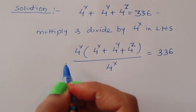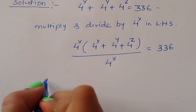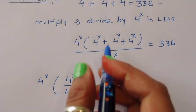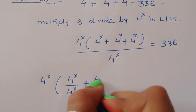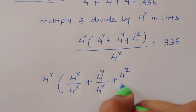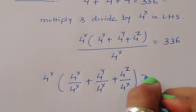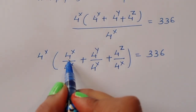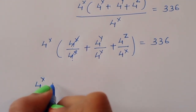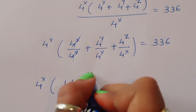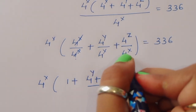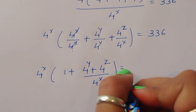Now if we multiply, we get 4 power x times 4 power x — separating the terms — plus 4 power y over 4 power x, plus 4 power z over 4 power x, is equal to 336. Now 4 power x divided by 4 power x cancels to 1, so we write 4 power x times (1 plus 4 power y plus 4 power z divided by 4 power x), because the bases are the same, is equal to 336.